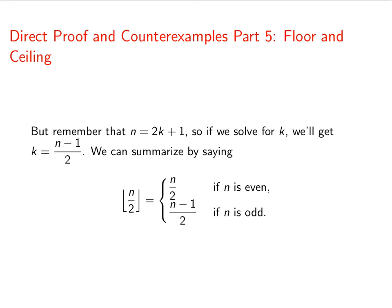So we're going to summarize this now, that the floor of n over 2, we're going to get n over 2 if n is even. And then, remember, we get k if n is odd. But what's k? k is n minus 1 over 2. So that's our other case.